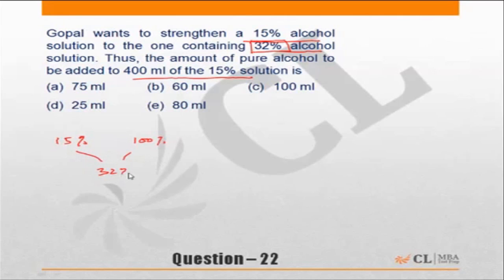So 100 minus 32 is 68, and 32 minus 15 is 17. The ratio is 68 to 17, which gives us 4 to 1. For every 4 liters of 15% solution, you will need 1 liter of 100% solution.